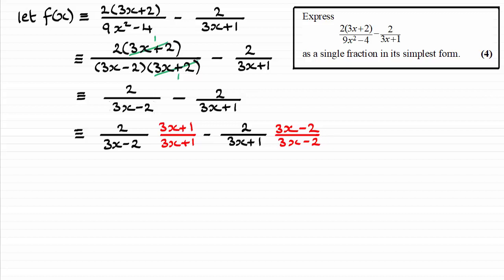And by doing that, we would put them all over this common denominator then, 3x minus 2 times 3x plus 1. And it means that we end up with 2 times 3x plus 1 minus 2 times 3x minus 2, as you see here.